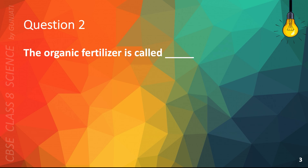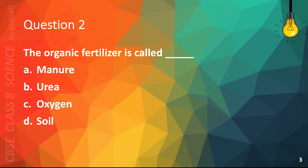Question 2. The organic fertilizer is called: A. Manure, B. Urea, C. Oxygen, or D. Soil. The correct answer is A. Manure.